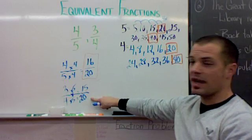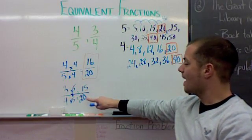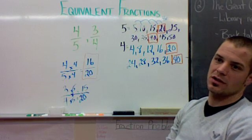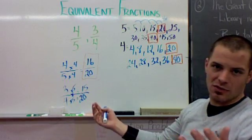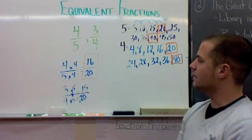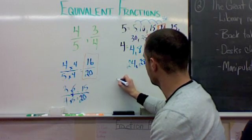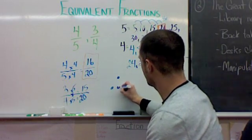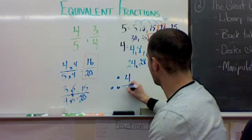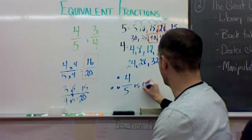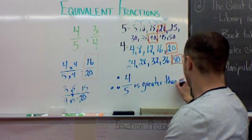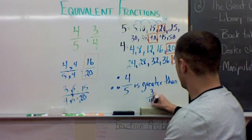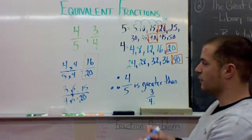If we look at these two, we can now follow principle number one. Now, they have like denominators. So, the numerator with the highest value is the greatest fraction, and that is sixteen over twenty. So, therefore, four over fifths is greater than three over four. And there's your therefore statement.